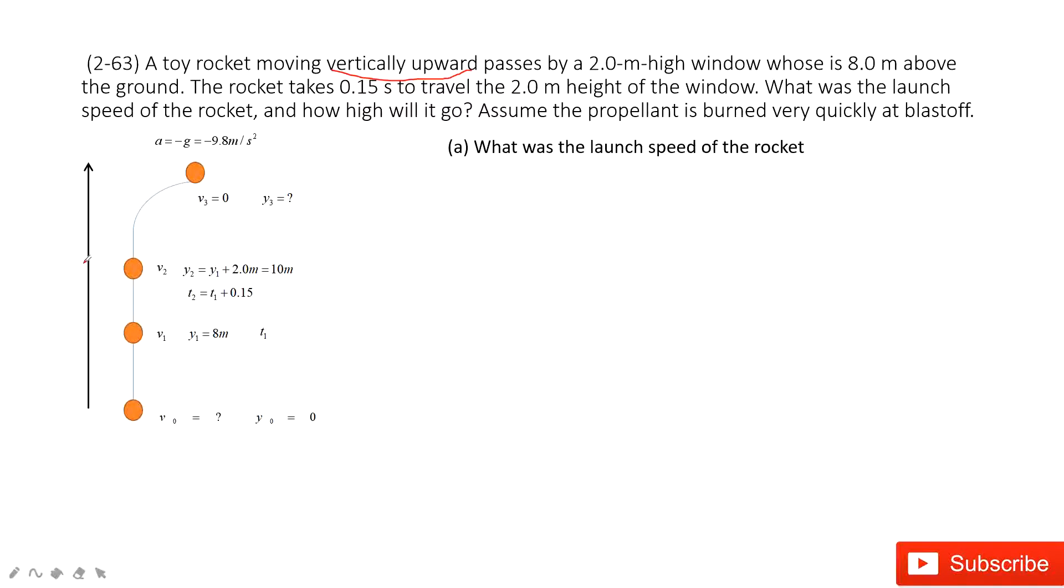So we take up as a positive direction. We consider the ground as a reference point, so the position y0 is 0 meters. The initial velocity is what we want to find. It tells us the rocket passes by a 2-meter high window which is 8 meters above the ground.